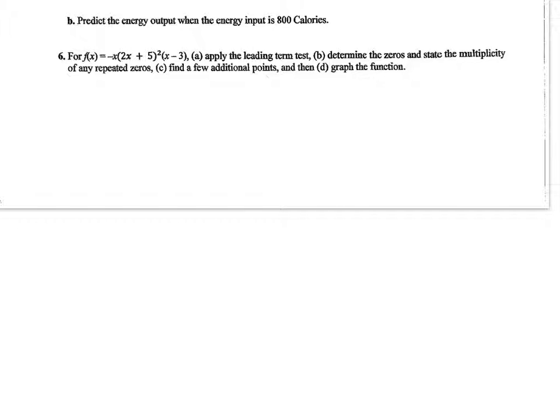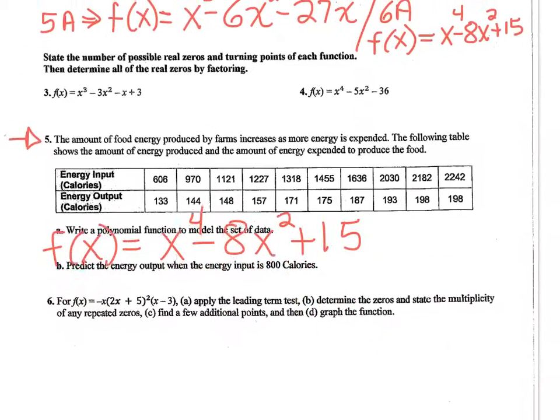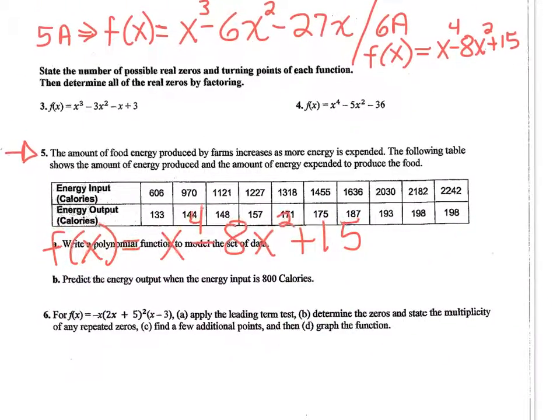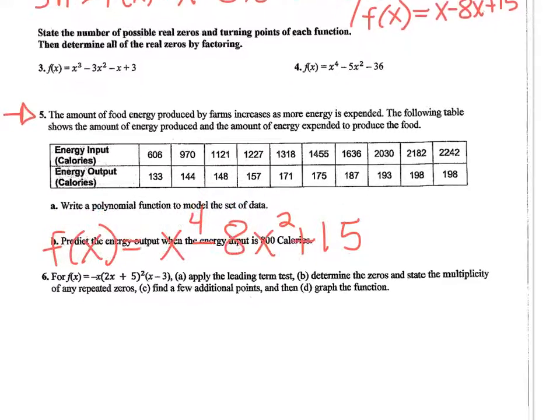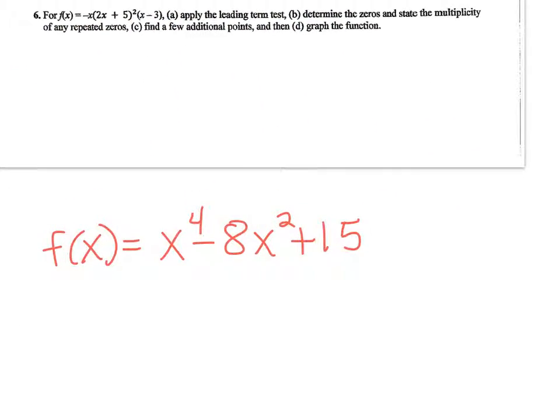Okay, so then I'm going to help you with the last one, which is f(x), that's number 6, right? 6a, f(x) = x⁴ - 8x² + 15. Okay, so the instructions are state the number of possible real zeros, the turning points, and then find all the solutions by factoring. So let's do that.